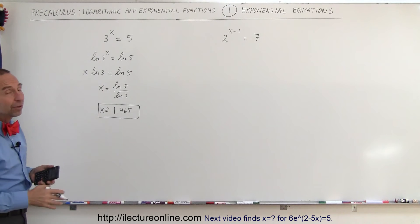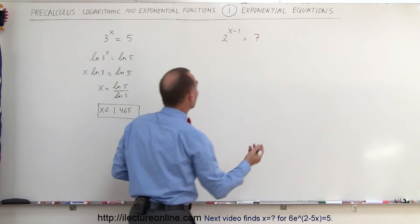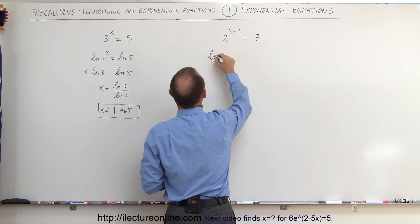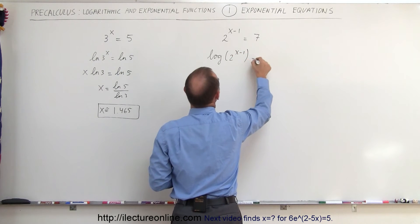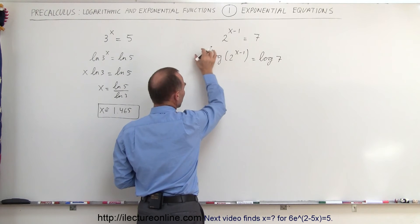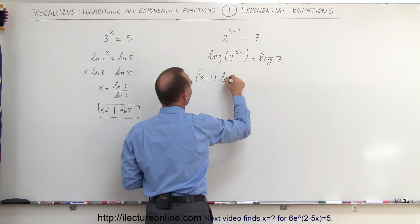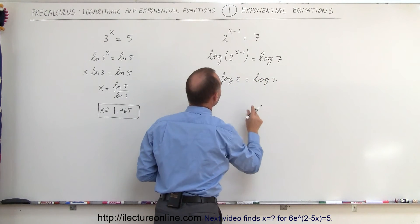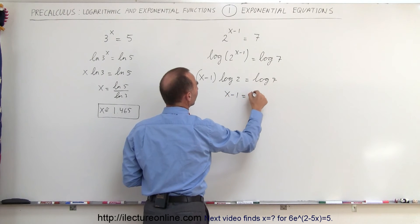Now we're going to do the second problem, but instead of using natural log we'll use log base 10. The methodology is exactly the same — we take the log of both sides, so the log of 2 to the x minus 1 is equal to the log of 7. Again the exponent can be moved in front, so we write x minus 1 times the log of 2 is equal to the log of 7. Then we divide both sides by the log of 2, giving us x minus 1 equals the log of 7 divided by the log of 2.